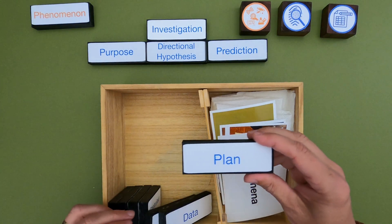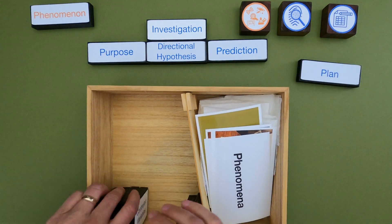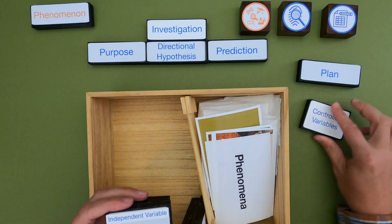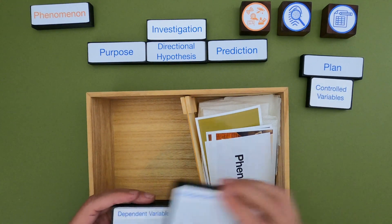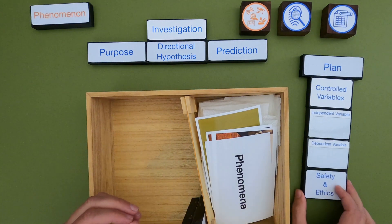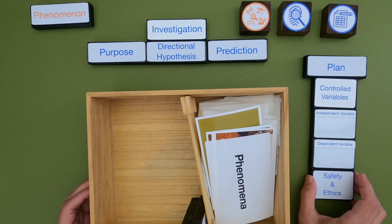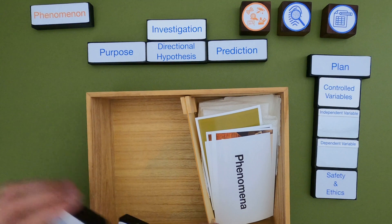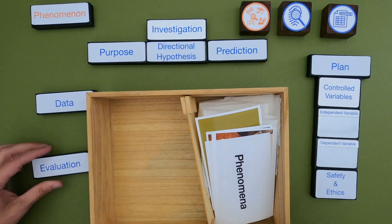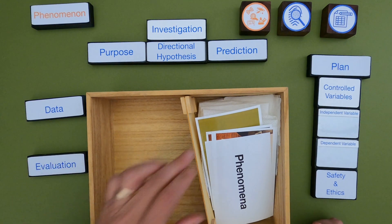As you plan your investigation, there are a lot of things to think about. First is variables: what are the controlled variables going to be, what's the independent variable, and what's the dependent variable? You also want to think about safety concerns and ethical concerns anytime you're doing an investigation. And then you're going to gather some data that we'll look at in just a second, and then evaluate that data once you're done.